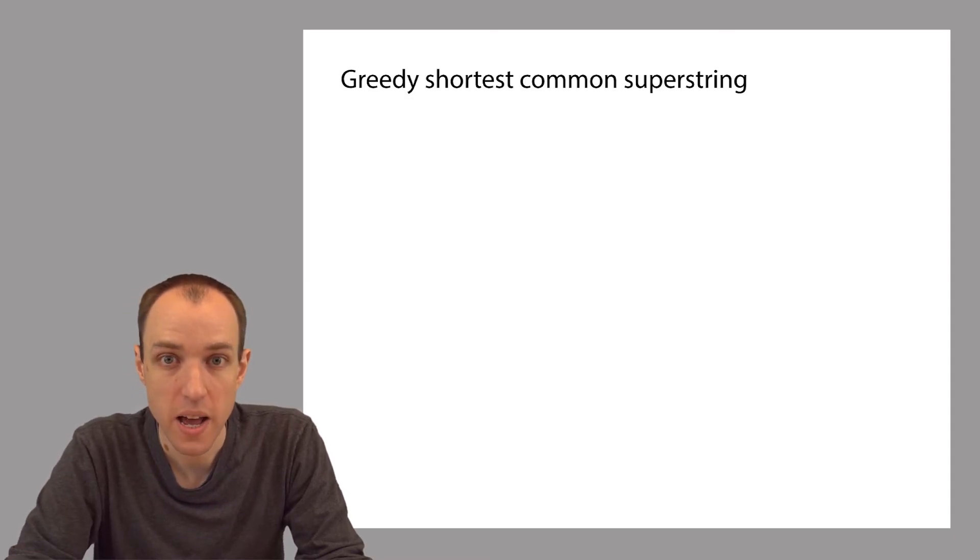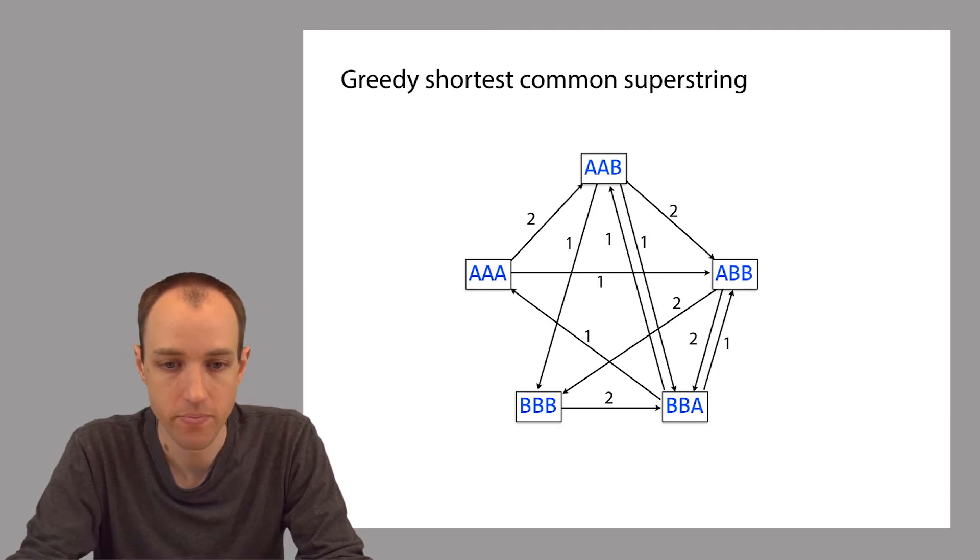We can visualize the greedy shortest common superstring algorithm using an overlap graph. The nodes of the overlap graph correspond to reads, and the edges correspond to overlaps, or suffix prefix matches, between pairs of reads. Each edge is labeled with a number that gives the length of the overlap.